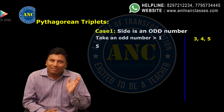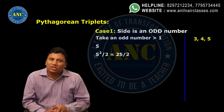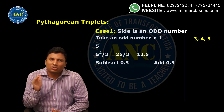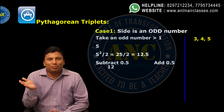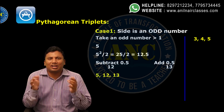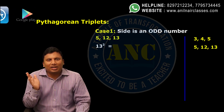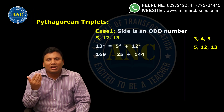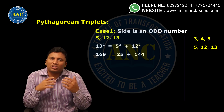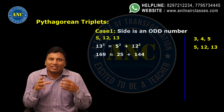Let's take another example: 5. Square it — 5 squared is 25. Divide by 2: 25 by 2 is 12.5. Subtract 0.5 gives 12, add 0.5 gives 13. So the next triplet is 5, 12, 13. You can cross-check using the Pythagorean theorem: 13 squared equals 5 squared plus 12 squared — that is, 169 equals 25 plus 144. We'll do two more so you understand how to calculate Pythagorean triplets when the side is an odd number.